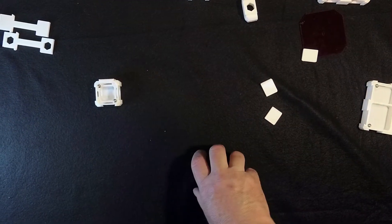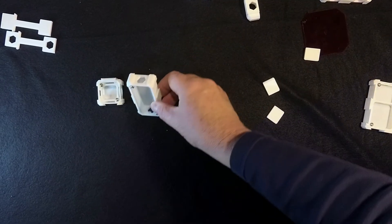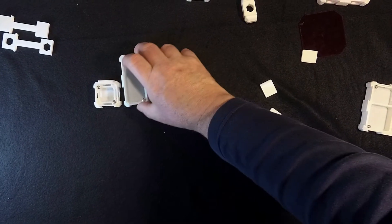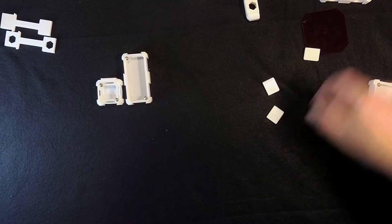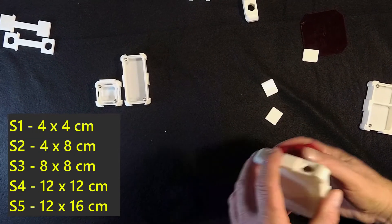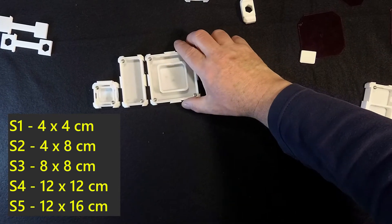Now let me show the different modules and sizes. First we have an S1, this is 4 by 4 cm. This one is S2, which is 4 by 8 cm, it's a double size. Then we have S3, which is 8 by 8 cm.